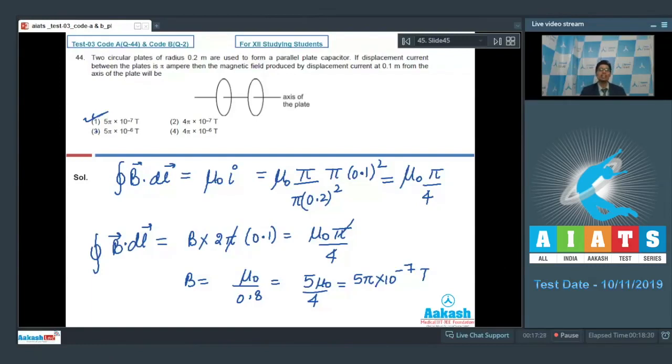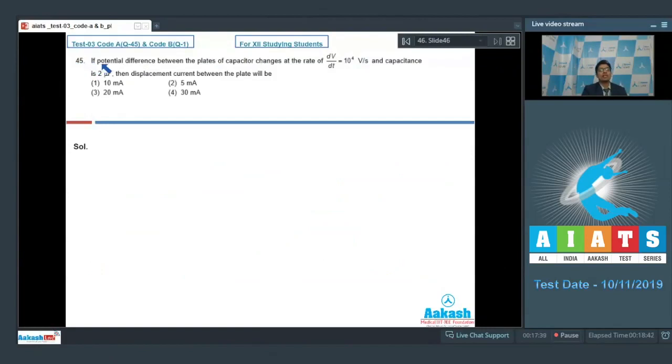Let us proceed to the last question, question number 45. What is the displacement current between the plates? We can write the charge on the capacitor as q = Cv. The displacement current in the case of charging of a capacitor equals the conduction current. Therefore, displacement current = dq/dt, which we can write as C×dv/dt because C is constant.